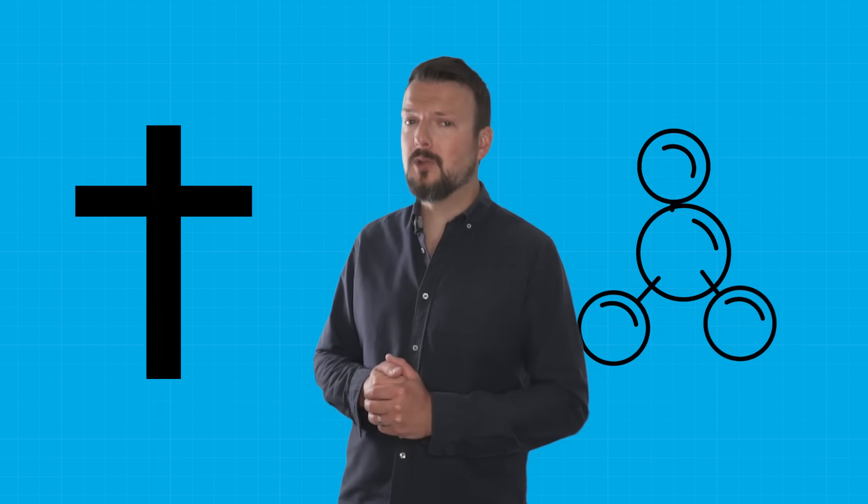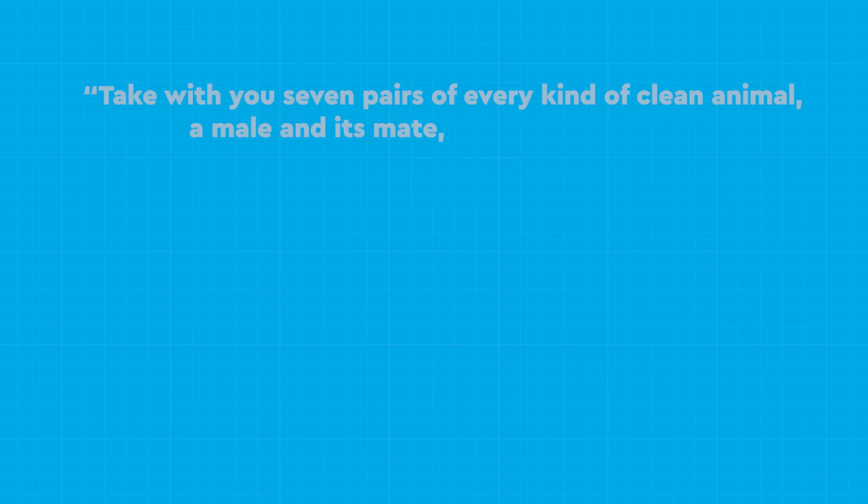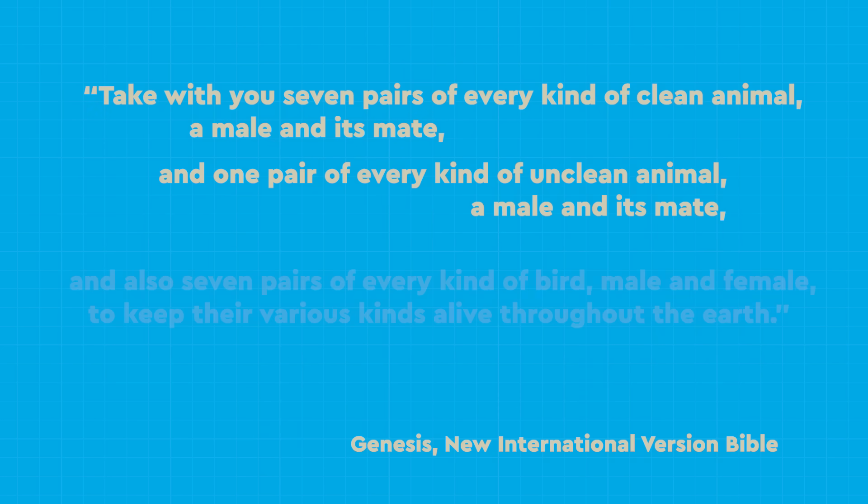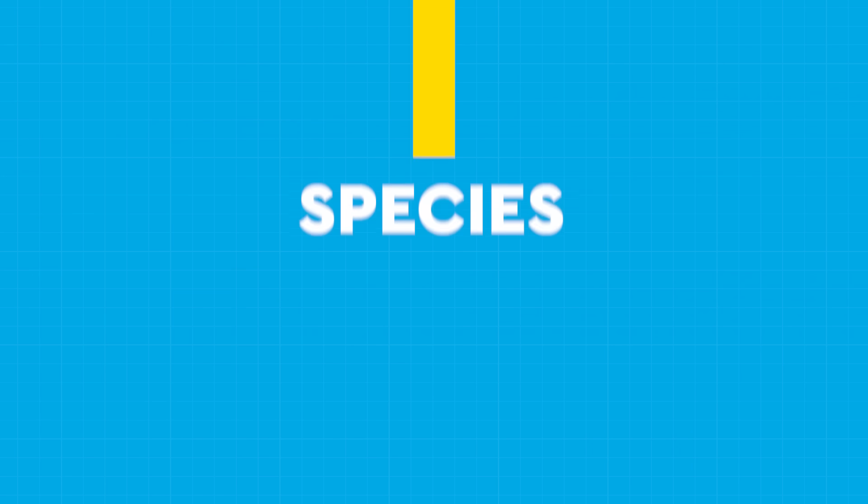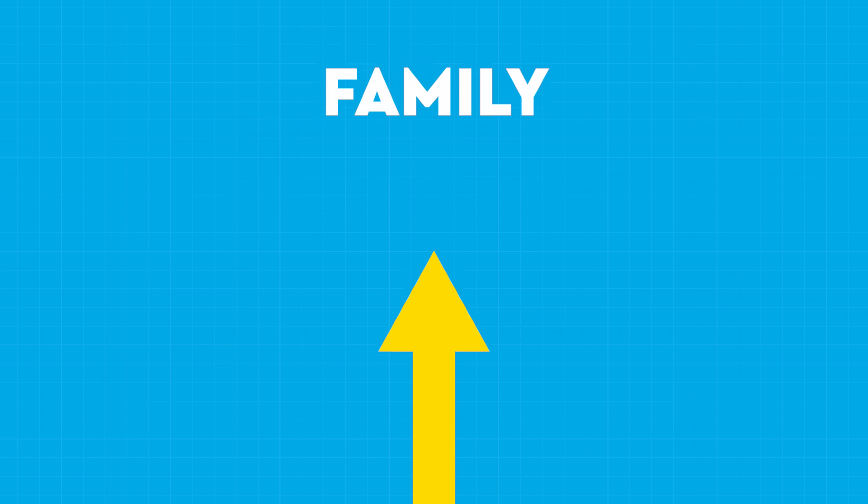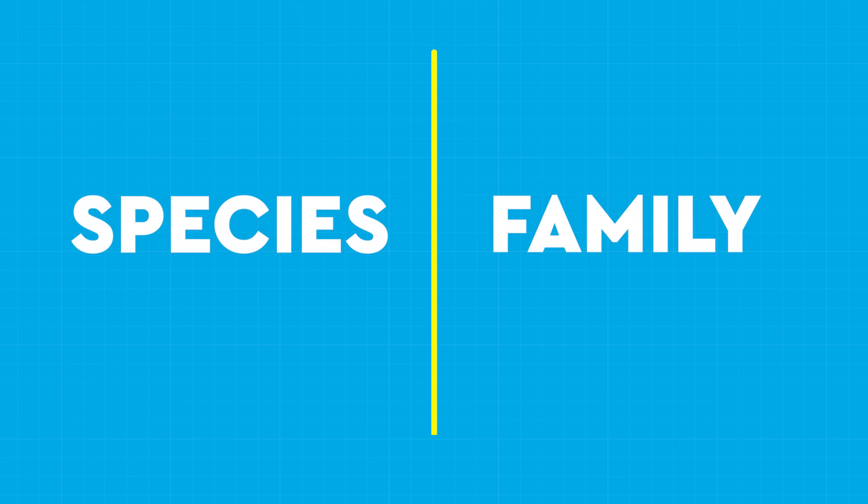Just how many animals is that though? In news that should not come as a shock, religion and science once again start to disagree here. Let's quickly address how biblical scholars interpret this. The language used in the Bible here is crucial. Note how it mentions kinds of animals. This isn't particularly specific. It could mean anything ranging from species all the way up to their family level in scientific taxonomy, and there's a big difference between those classifications.